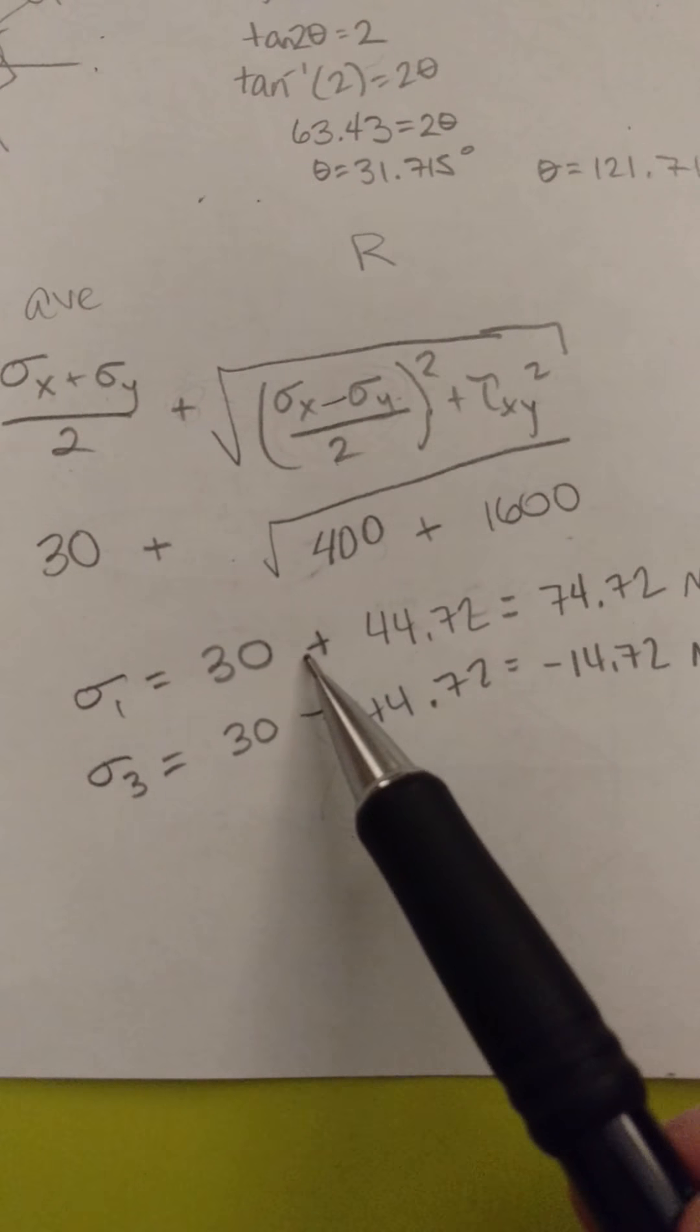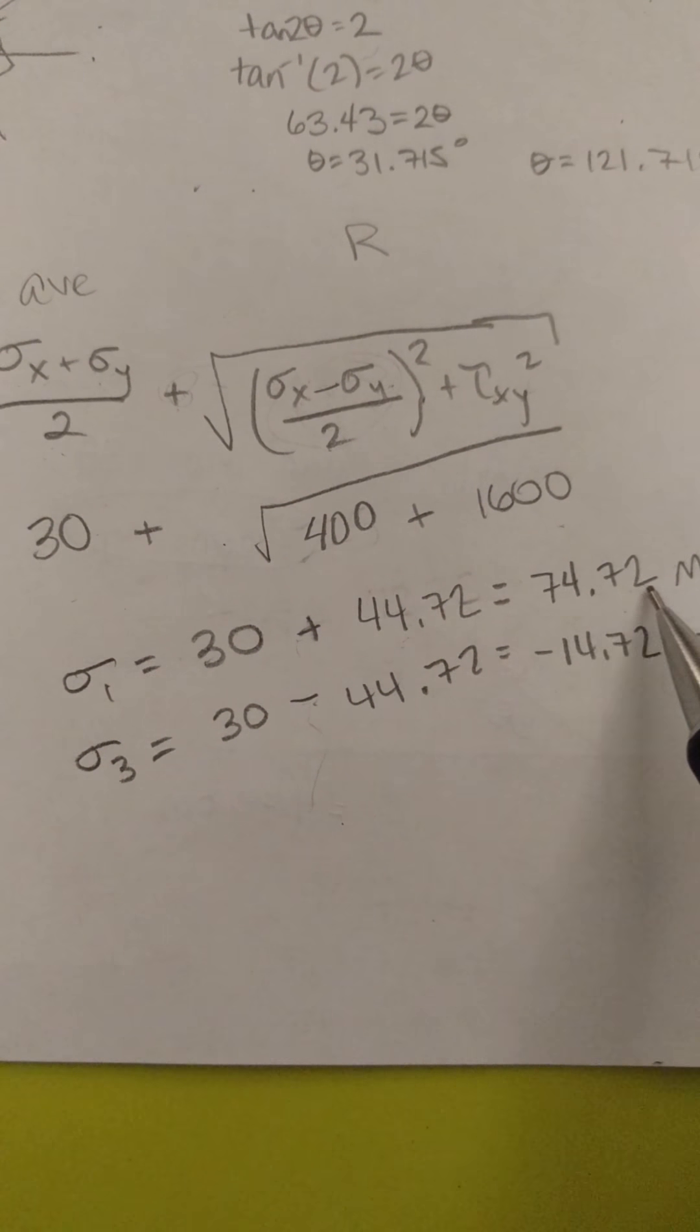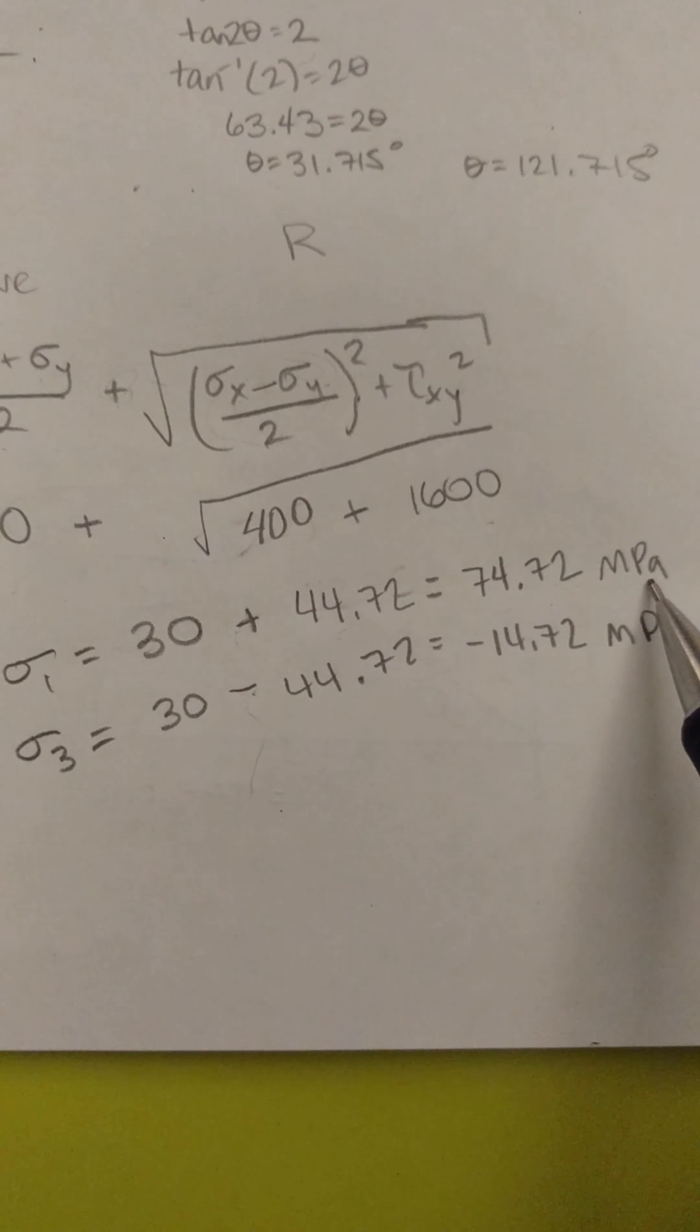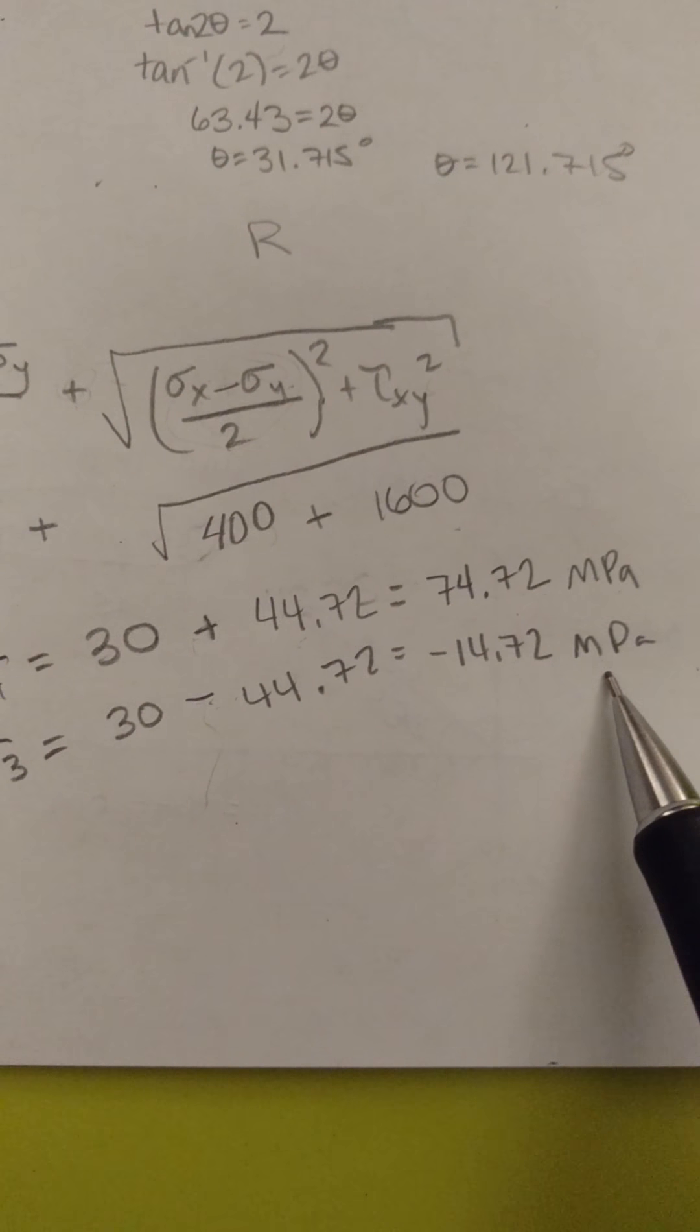So sigma 1, again, I'm adding these together, and I get 74.72 MPa, and for sigma 3 I'm subtracting them, and I get negative 14.72 MPa.